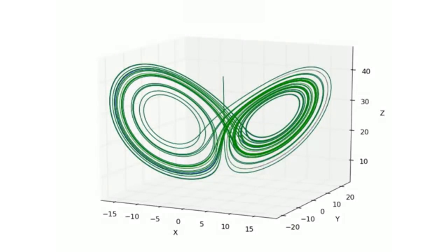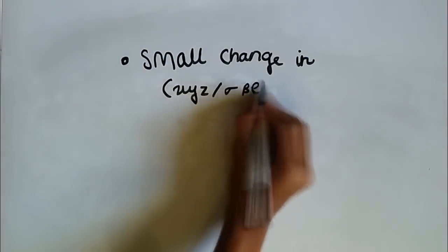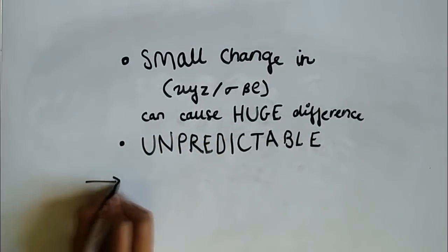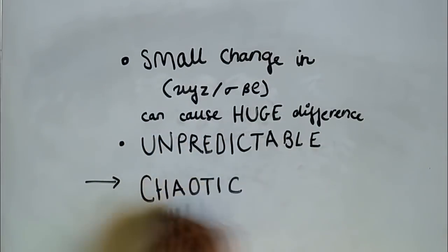Also, it's almost impossible to predict where the value of the graph is going to go next, whether it's going to go on the left circle or the right circle. Since in this system, small changes cause huge changes over time, and the system is unpredictable, we can come to the conclusion that this system is chaotic.